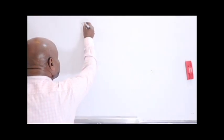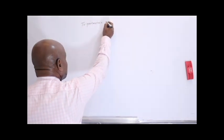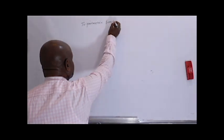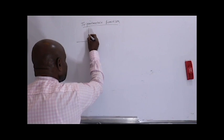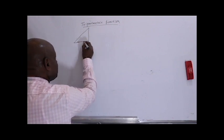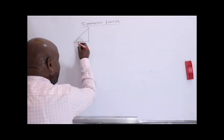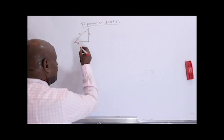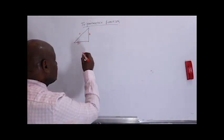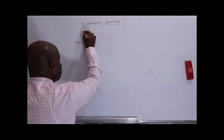As I told you, trigonometric function is related with a triangle. A triangle has three sides. Let's call this A, B, and C. Let me give you the magnitudes: A is 3, B is 4, and C is 5.